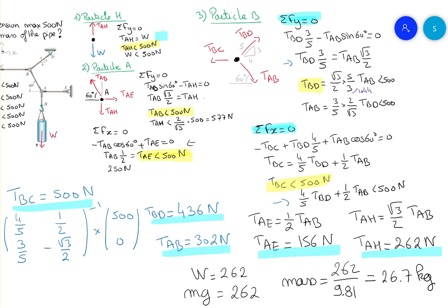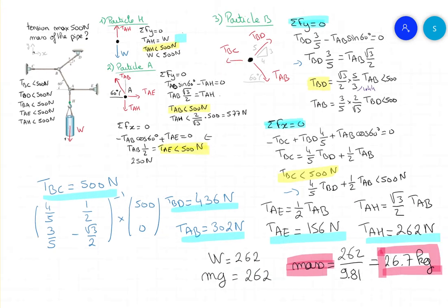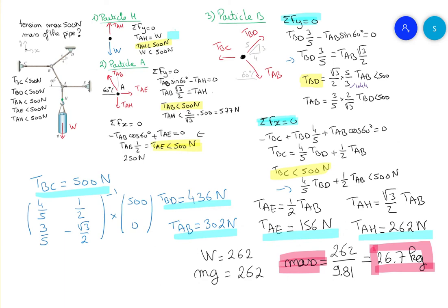Final answer: the mass of the cylinder cannot be more than 26.7 kg. Because of the way the ropes are attached together with those angles, the tension in TBC will be the crucial tension and will reach 500 N when the mass of the cylinder is 26.7 kg. That's it for this one — see you next time, bye bye!